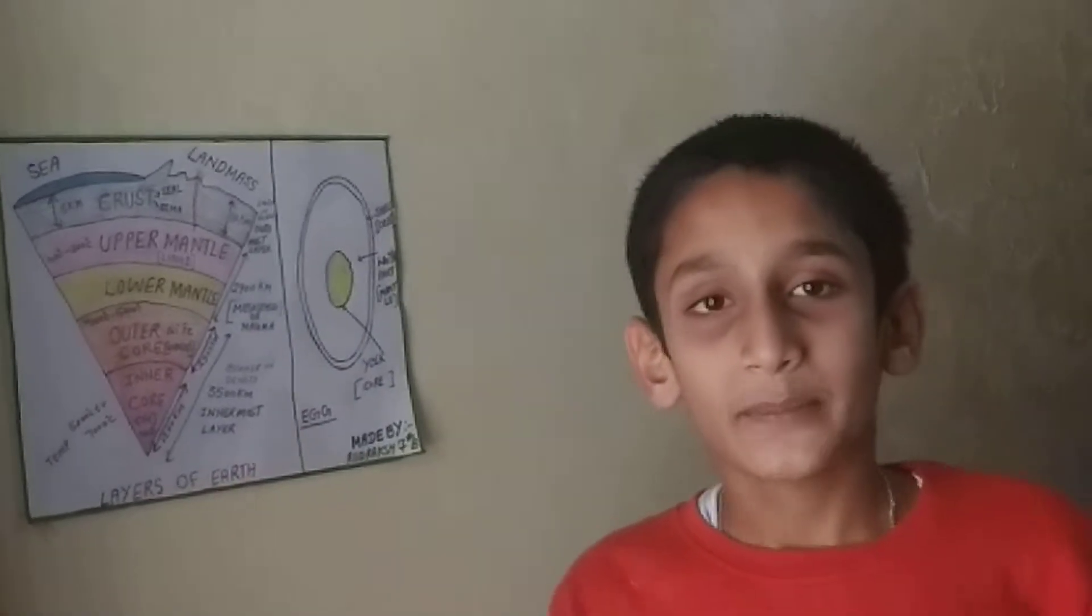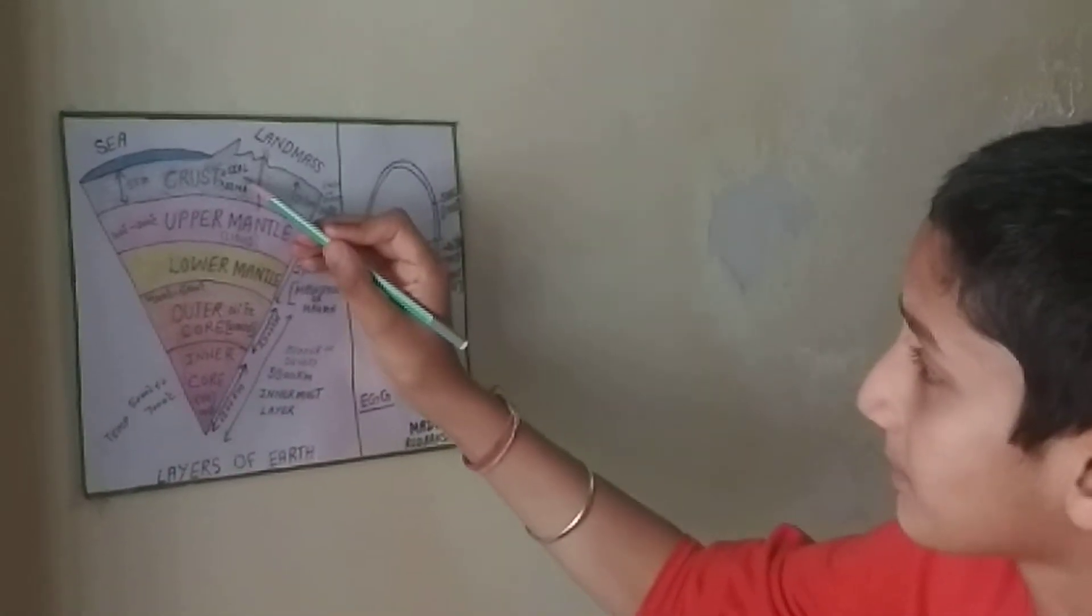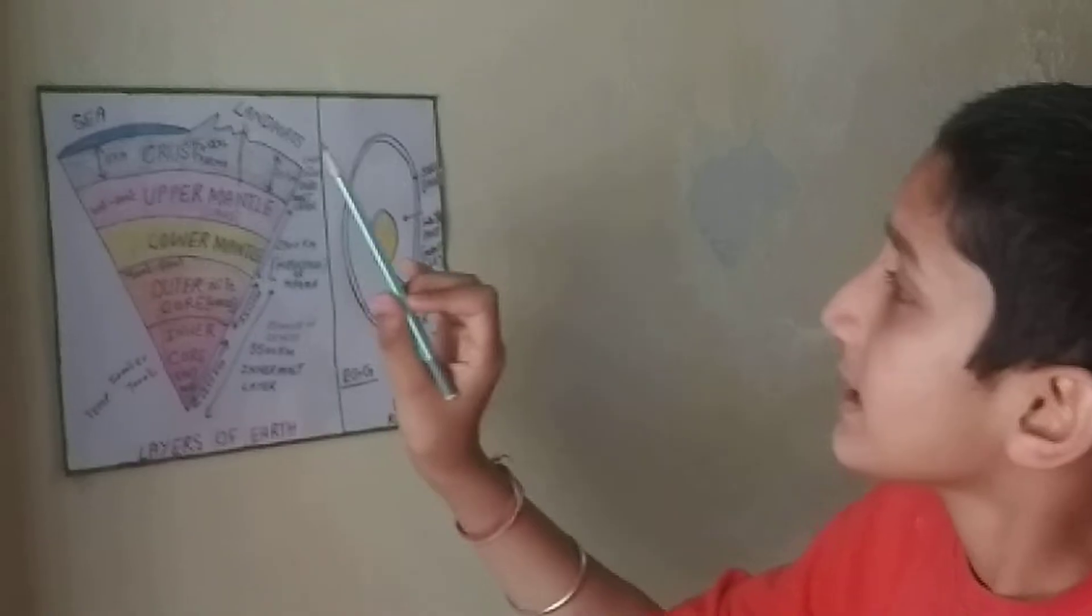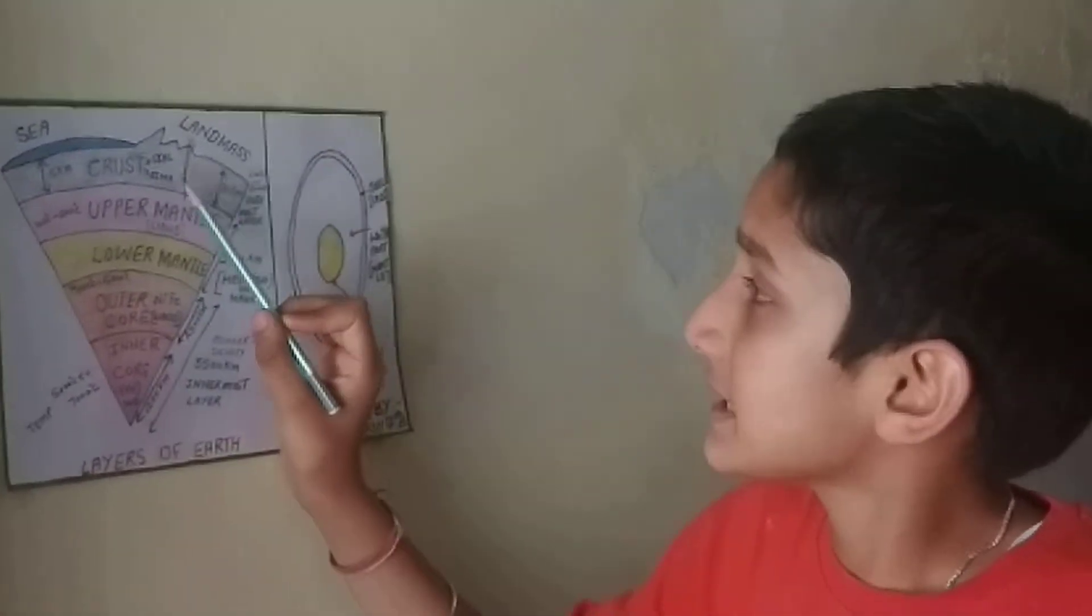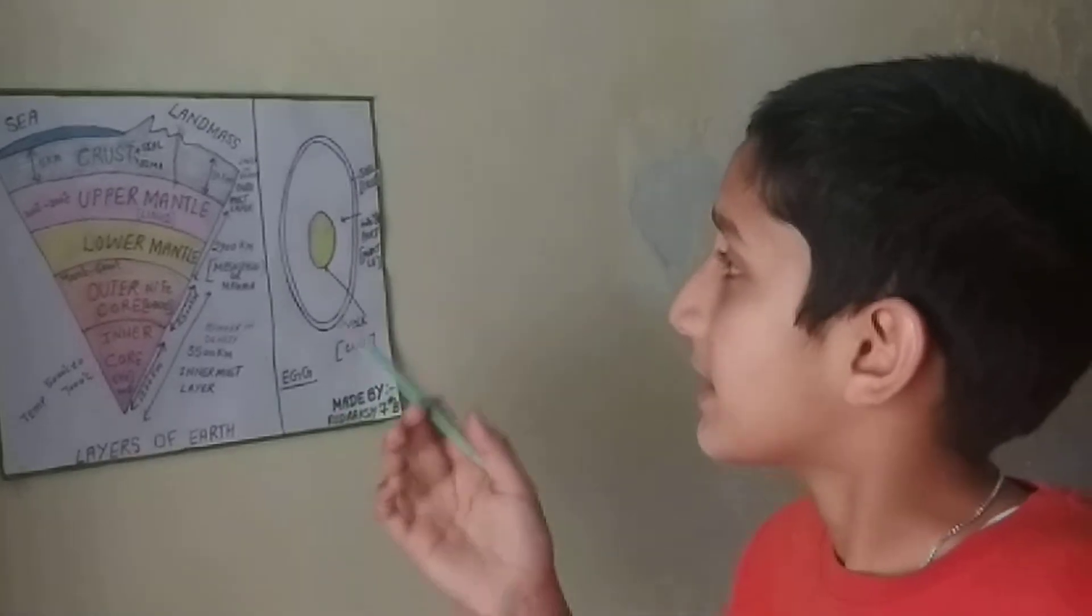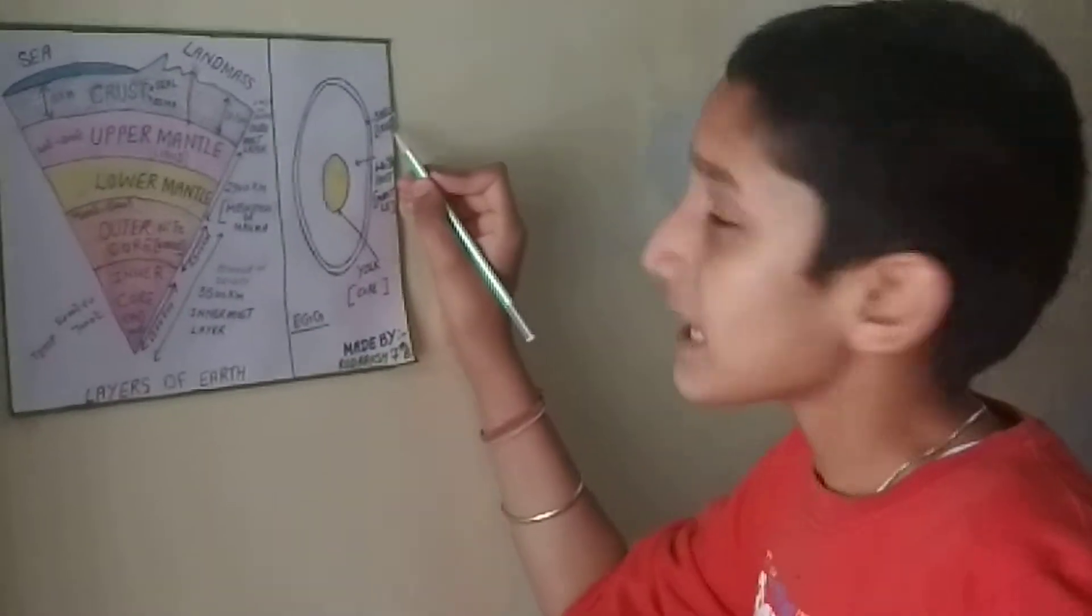The crust is made up of two parts: sial and sima. Sial is also known as upper crust and sima is also known as the lower crust. Sial is made up of silica and aluminum, whereas sima is made up of silica and magnesium. The crust also resembles the shell of the egg.